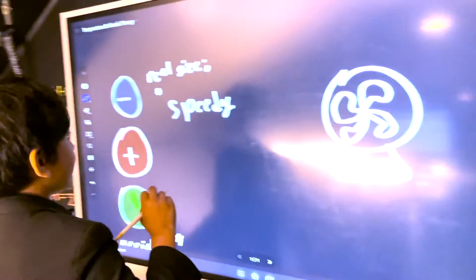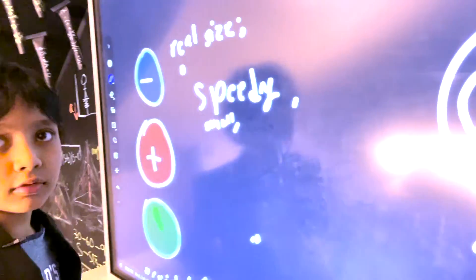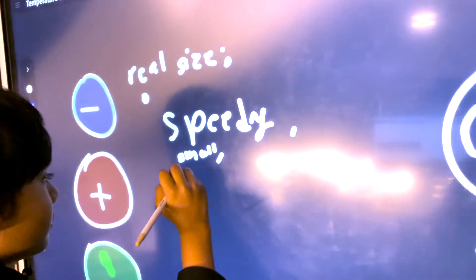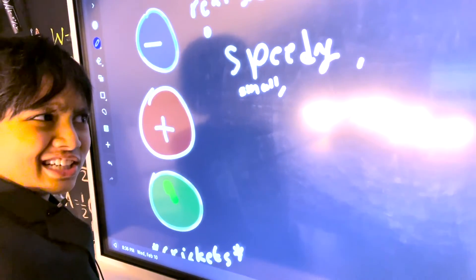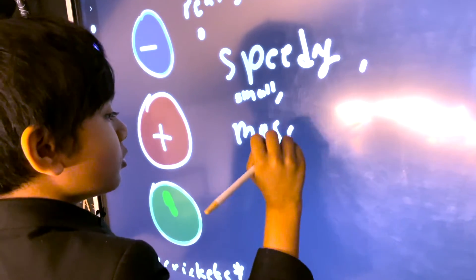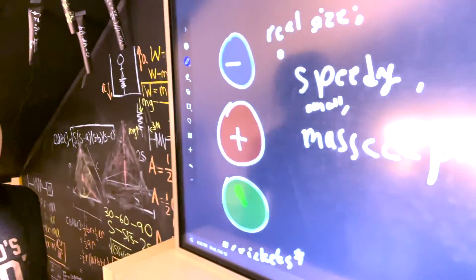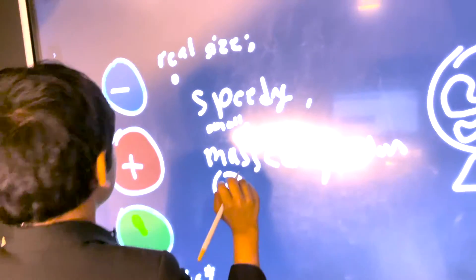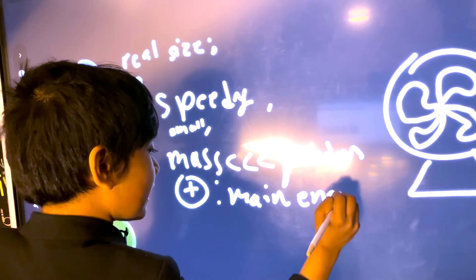The electron is really speedy, really small, and its mass is incredibly small as well. Those are the basics of it. It's only there to cancel out the proton.